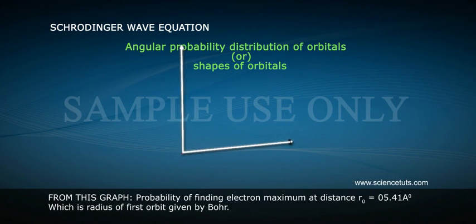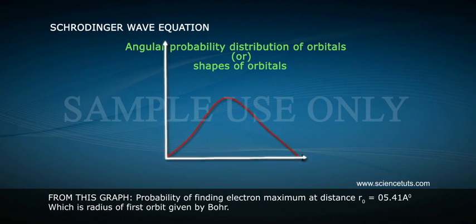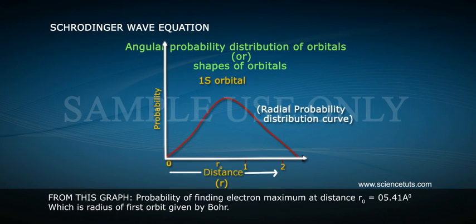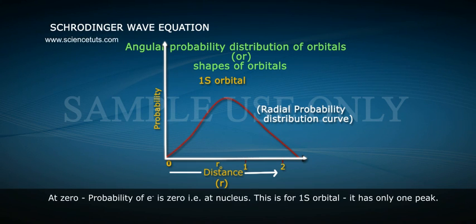From this graph, probability of finding electron at distance r₀ equals 0.541 angstrom, which is radius of first orbit given by Bohr. At zero probability of electron is zero, that is at nucleus. This is for 1s orbital, it has only one peak.